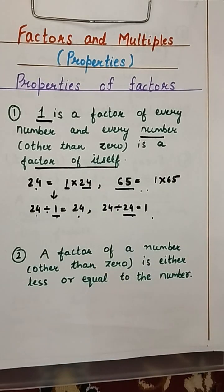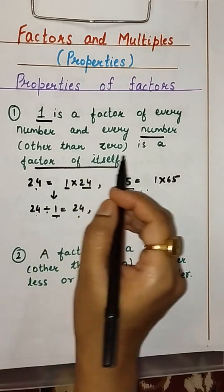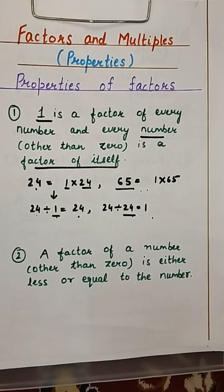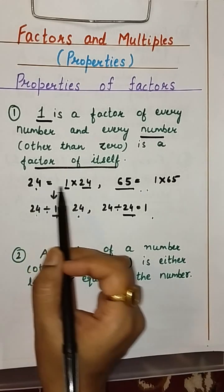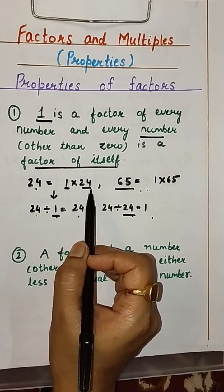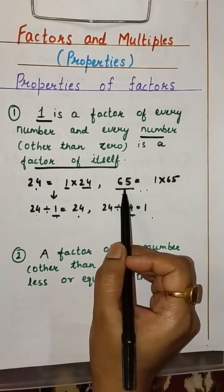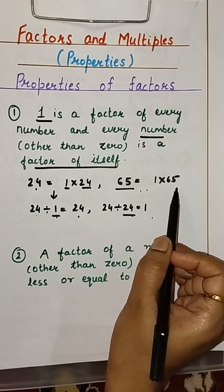This means that for any number, when we find its factors, 1 and the number itself will always be factors. For example, 24 can be written as 1 into 24, and 65 can be written as 1 into 65.